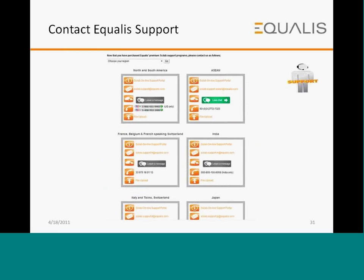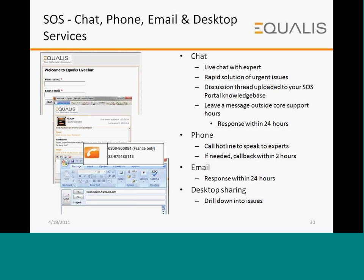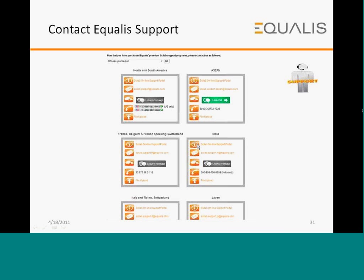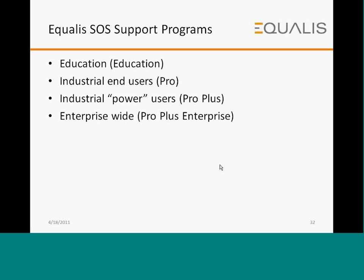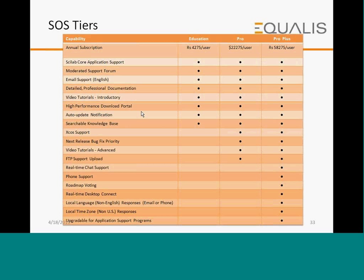On the Contact Equalus page, you would see a screenshot like this. India would be online and you would see a green light for chat. Otherwise, you can leave a message and we get back to you the following day. We offer support programs for education institutions and for industry: Pro, ProPlus, and ProPlus Enterprise. For industry, the pricing is 22,275 rupees per user per year for Pro, and 58,275 for ProPlus. For education, it is 4,275 rupees per year per user.